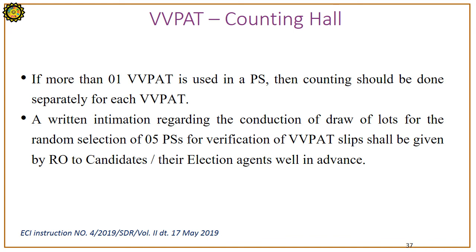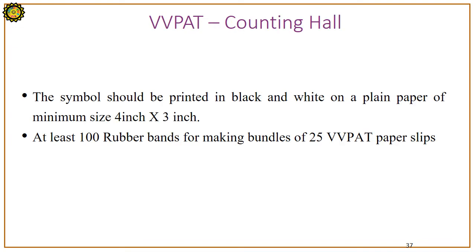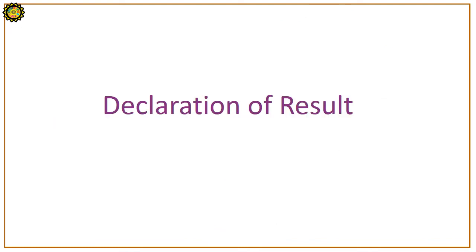A written intimation regarding the draw of lots for random selection of five polling stations for VVPAT slip verification shall be given by the Returning Officer to candidates or their election agents well in advance. White color paper cards of postcard size shall be used for the draw of lots; total number of postcards equals the number of polling stations in the assembly constituency. At least 100 rubber bands for making bundles of 25 VVPAT slips are required. The Part 2 of Form 17C used for VVPAT slip counting is shown on screen.